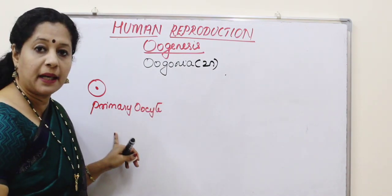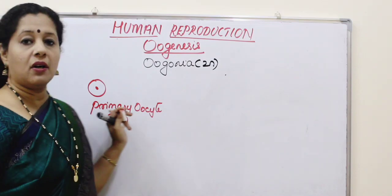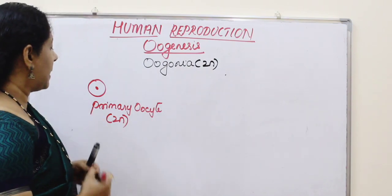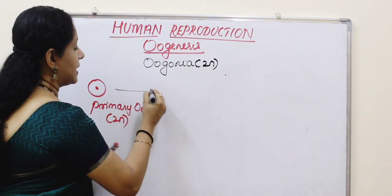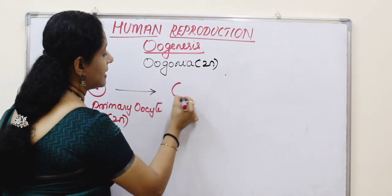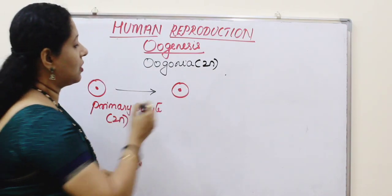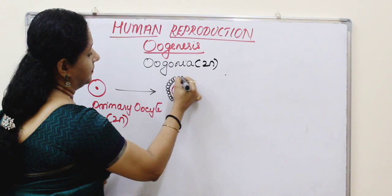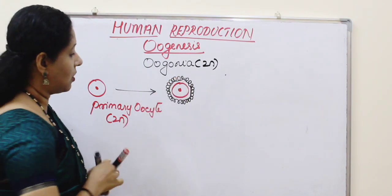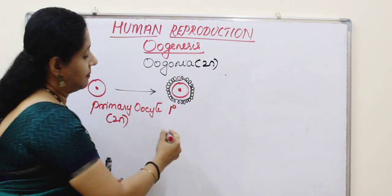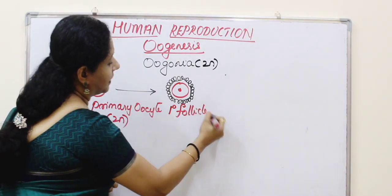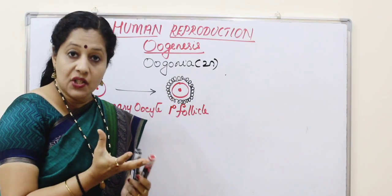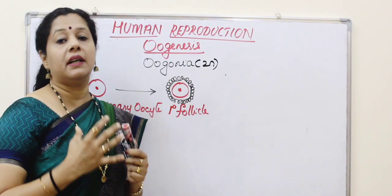The ploidy of the primary oocyte is still diploid because meiosis 1 itself is not complete — only prophase 1 is complete. Now the primary oocyte will accumulate some granulosa cells around it to form a structure called a primary follicle. The cell inside is still the primary oocyte, but the entire structure is called the primary follicle with the granulosa layer.